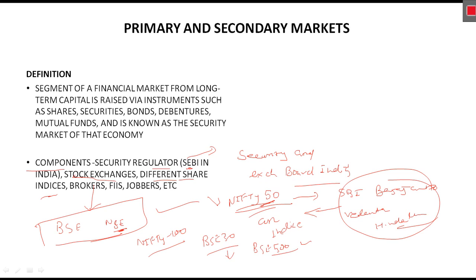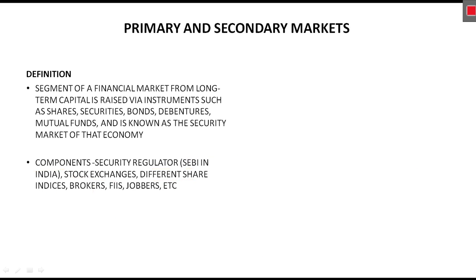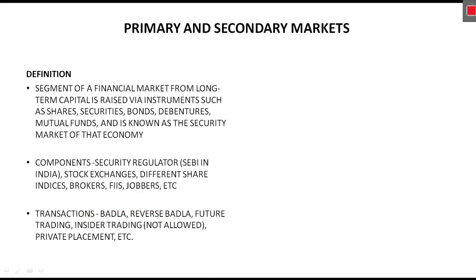Other components include brokers such as Motilal Oswal, and some banks also act as brokers — for example, Axis Direct, which is a subsidiary of Axis Bank. These brokers open demat accounts and act as intermediaries. There are also FIIs (Foreign Institutional Investors) and other financial institutions as part of the security market.